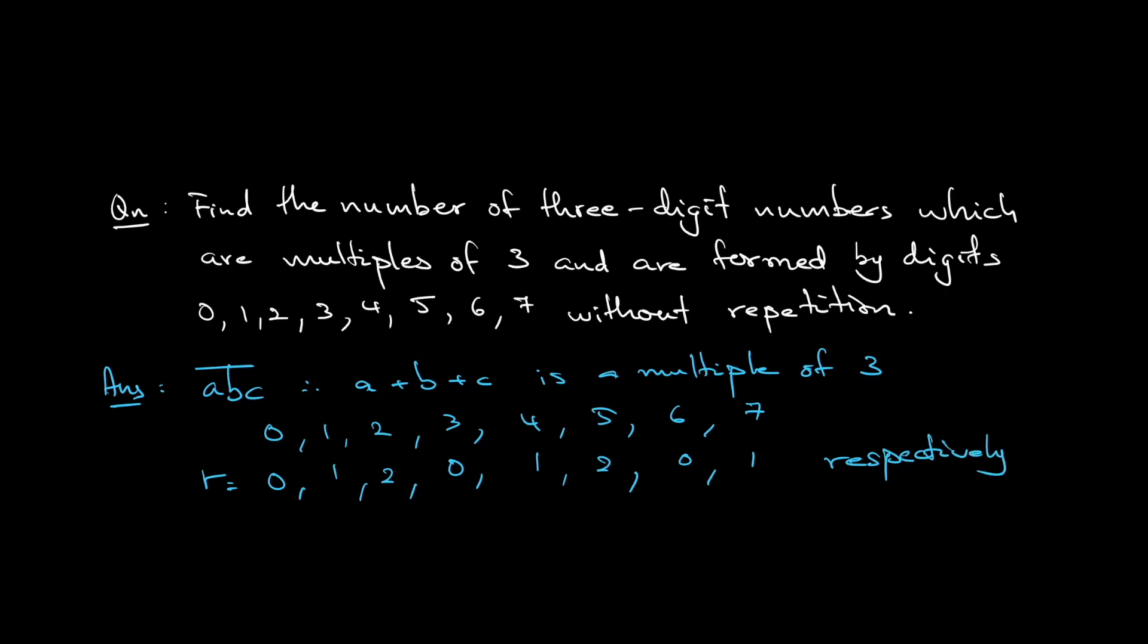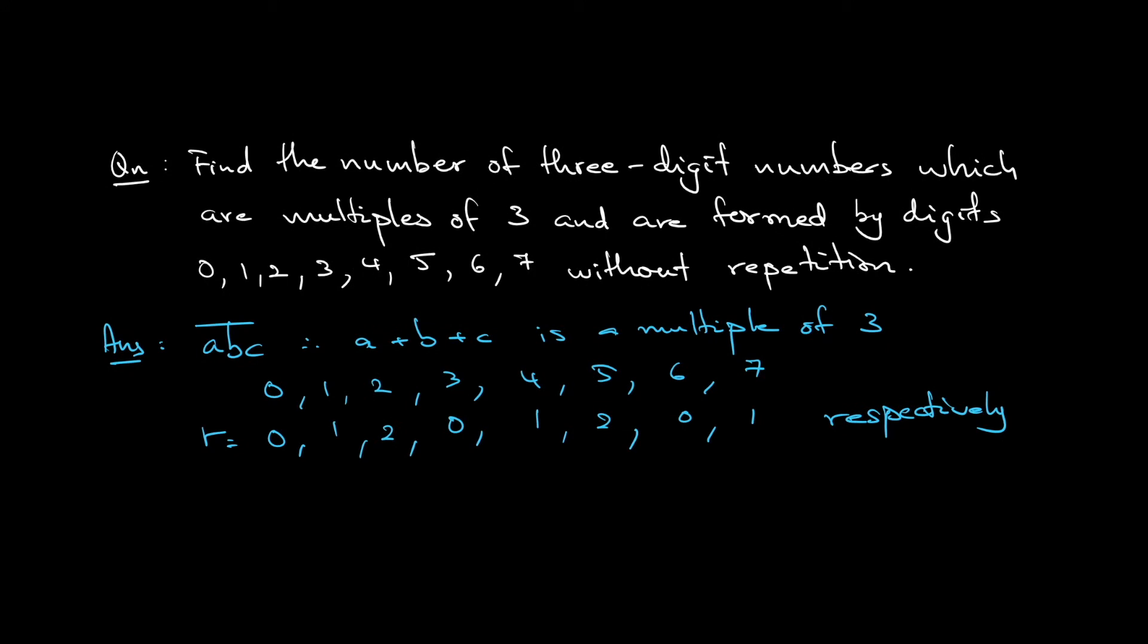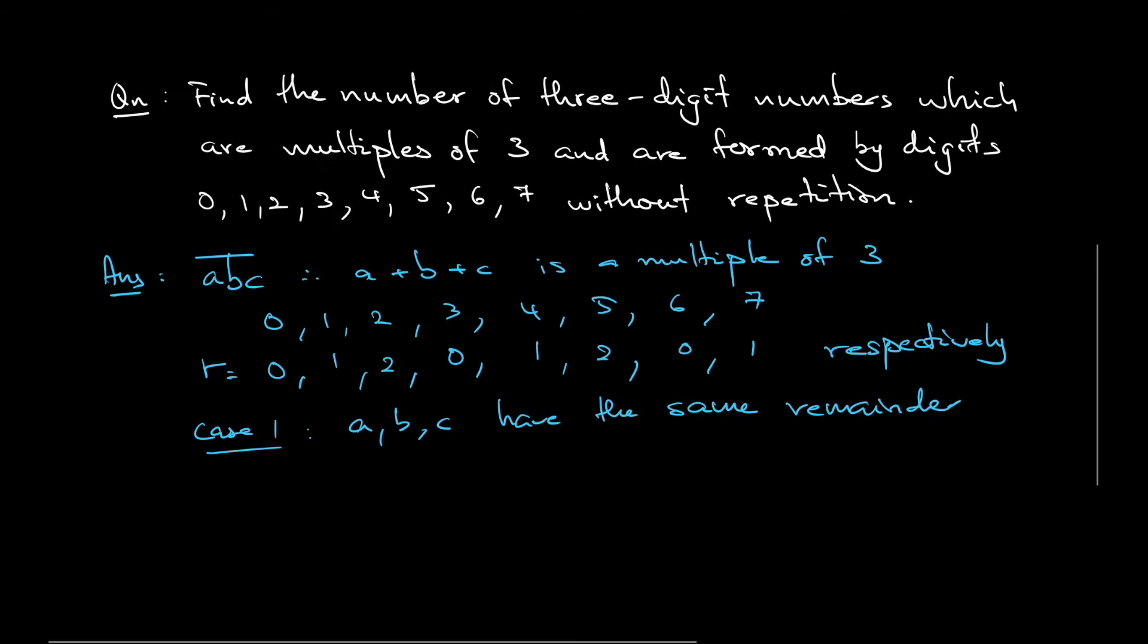Okay, so if you want a plus b plus c to be a multiple of 3, case 1 would be a, b, c all of them has the same remainder. What I mean by this is let's say a has remainder 0, b also has remainder 0, and c has remainder 0, add up together is a multiple of 3. Or a has remainder 1, b has remainder 1, and c has remainder 1, add up together is divisible by 3. A is remainder 2, b remainder 2, and c remainder 2, add up together also still divisible by 3.